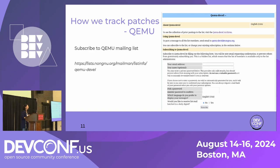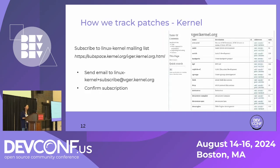For QEMU, you just fill out a form on the website — only the email address is essential. For the Linux kernel, there are many sub-projects listed with addresses for each, as well as the overall Linux kernel address. All you need to do is send a mail to the address and confirm the subscription as instructed.